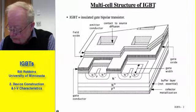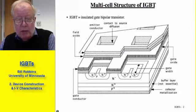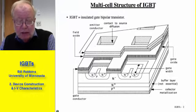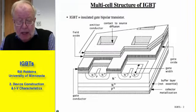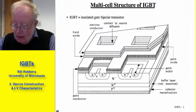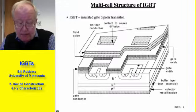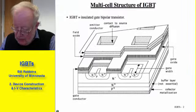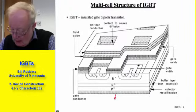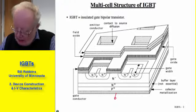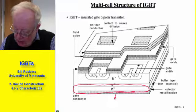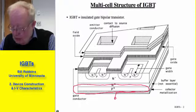Here we see the multi-cell structure of the IGBT, and the first impression is it looks very much like the structure for a power MOSFET, and indeed this is basically how an IGBT is constructed. The main difference being the injecting contact down here at the collector end of the device, the collector being here, and the emitter being here — the contact where we normally think of it as the source.